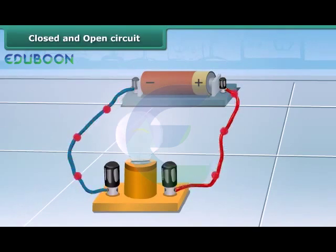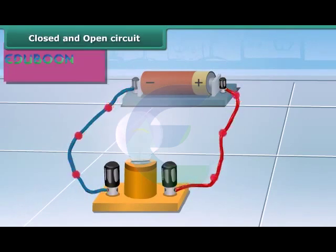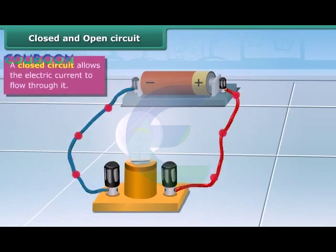Closed and open circuit. If you see both the wires are connected to both the terminals, it is an unbroken path. It is a closed circuit.